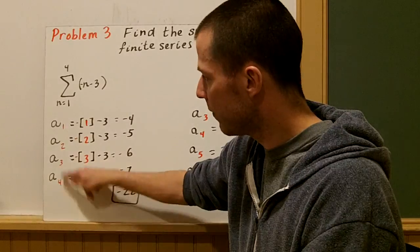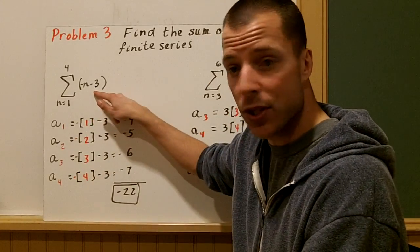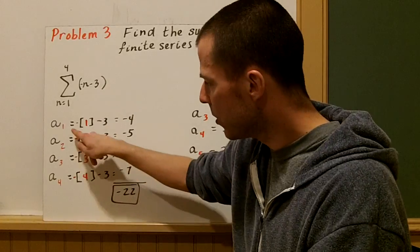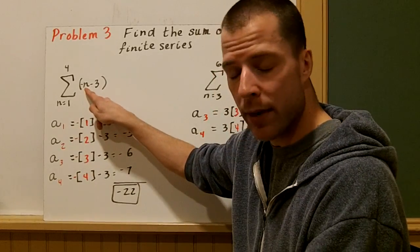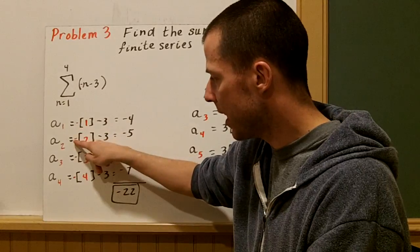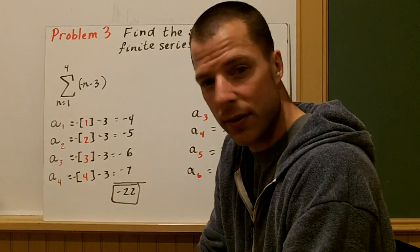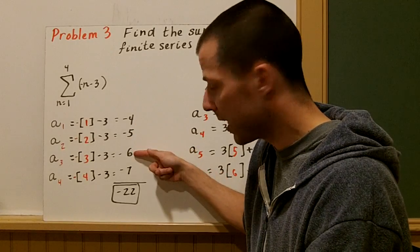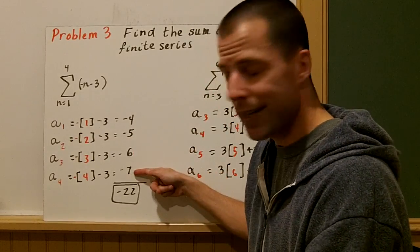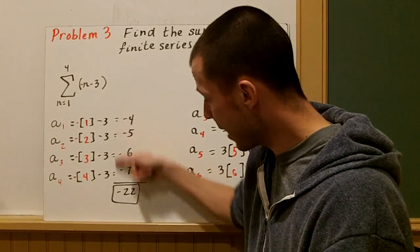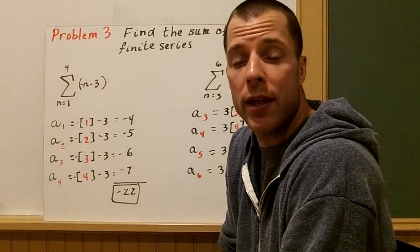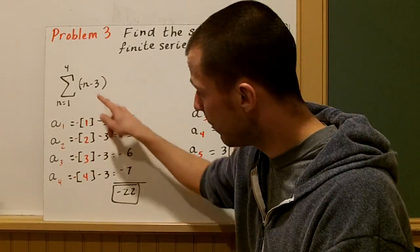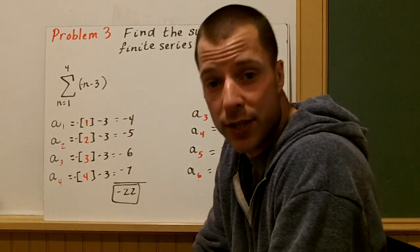So I plug 1, 2, 3, and 4 back into my explicit rule. And I've done that for each one of these. Don't forget I put the negative on the outside because I just plugged in my n value. And when I simplify, I get negative 4, there's my first term. Negative 5, second. Negative 6 is my third. And negative 7 is my fourth. Add them all together, you get negative 22. That is the sum of the first four terms of this arithmetic series.